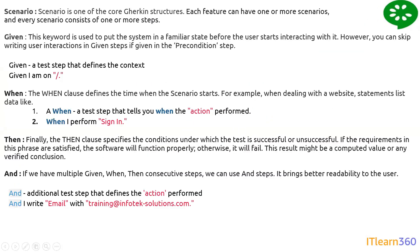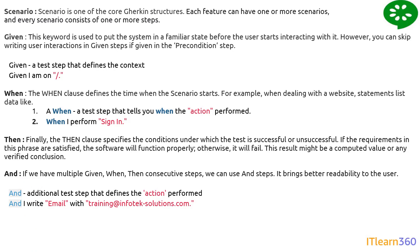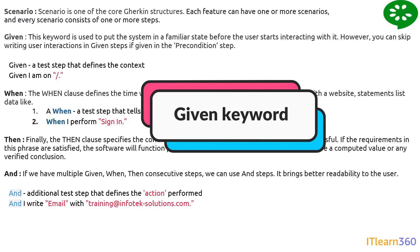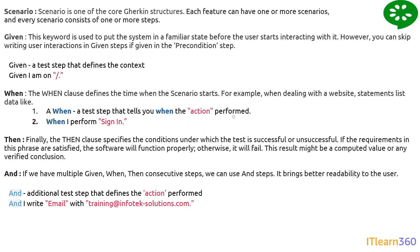Feature files will have at least one scenario, and every scenario can consist of one or more steps. These steps are written using keywords like Given, When, Then, and And. There is a condition specifying in which case we use each keyword. Given is used in pre-conditional steps — when we are passing details like a URL or informative data, we use the Given keyword.